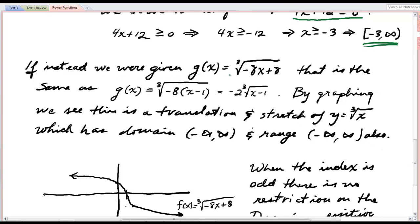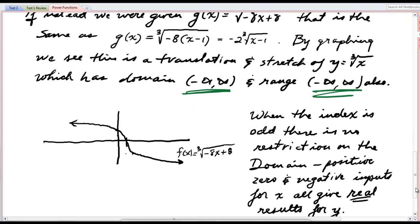If instead we were given g of x, now it's an odd root, it's a cube root. g of x is equal to the cube root of negative 8x plus 8. Well, that's the same as g of x equals the cube root of negative 8 times x minus 1. And when you pull that negative 8 out, because it's a perfect cube, you can see that this is a stretch, a vertical flip, and a translation of one space to the right of our regular cube root graph. The cube root graph is unrestricted. Its domain is negative infinity to infinity. Its range is also negative infinity to infinity. So, it makes sense that if that is the graph we're translating, then it would also be unrestricted in its translated form.